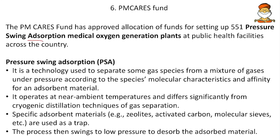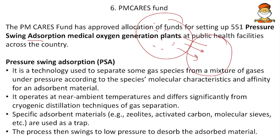Pressure Swing Adsorption (PSA) is a technology used to separate gas species from a mixture of gases such as carbon dioxide, nitrogen and oxygen. By applying pressure, one gas is separated. When the pressure is released, the pure gas is obtained. This switching of pressure from high to low is called the pressure swing adsorption technique, and it is applied for oxygen generation in PSA medical oxygen plants.